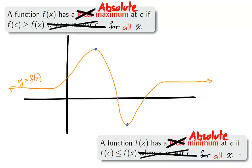A function f has an absolute maximum at c if f of c is larger than f of x for all x in the domain of f. Similarly, f has an absolute minimum at c if f of c is smaller than f of x for all x in the domain of f.